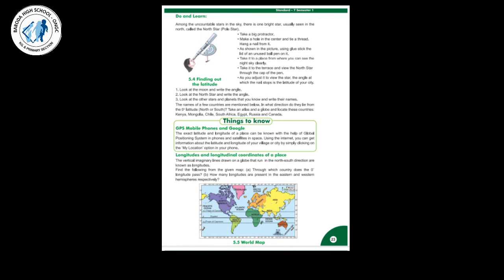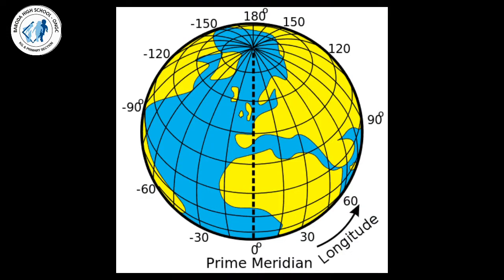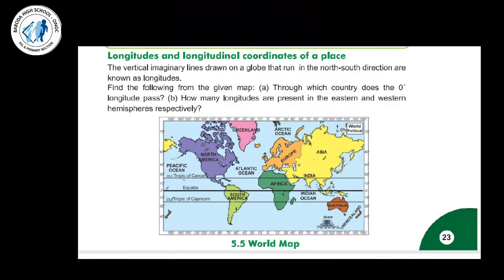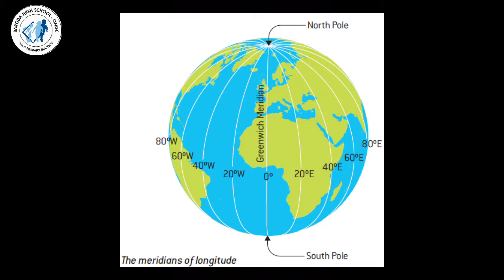Today we will be discussing about longitudes and the longitudinal coordinates of a place. So what are actually longitudes? Latitudes are the horizontal lines. Longitudes are the vertical imaginary lines which are drawn on a globe that run in the north-south direction. They are actually vertical lines, as there are no such lines on actual earth — they are imaginary.